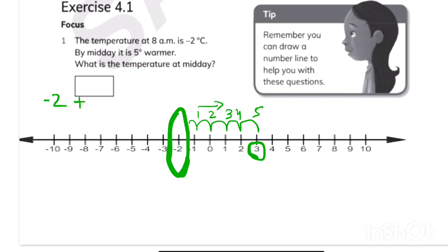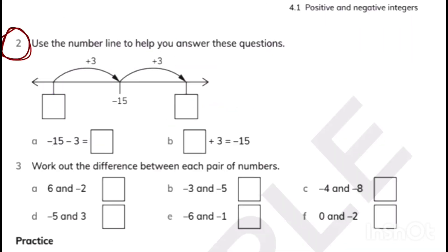Now let's understand with integers. Minus and plus — we have two different signs, so we find the difference. The difference is 3, and 5 has a positive sign, so we use no sign because no sign means positive. In part 2, something added gives minus 15, so we move back three steps on the number line to get minus 18.